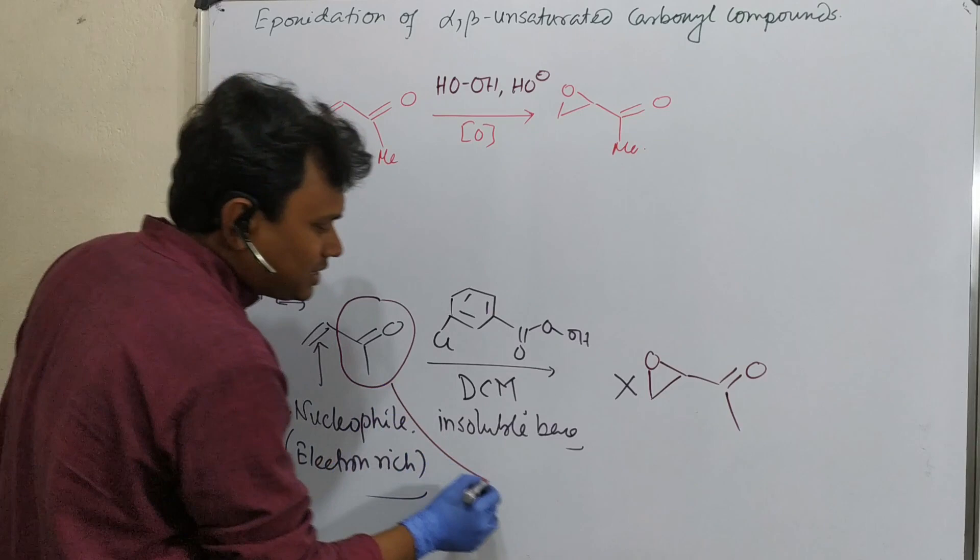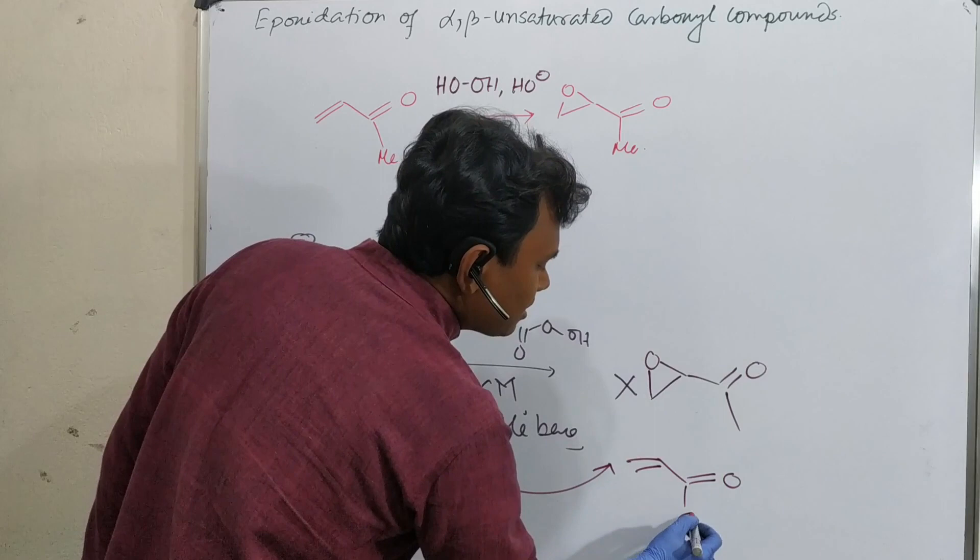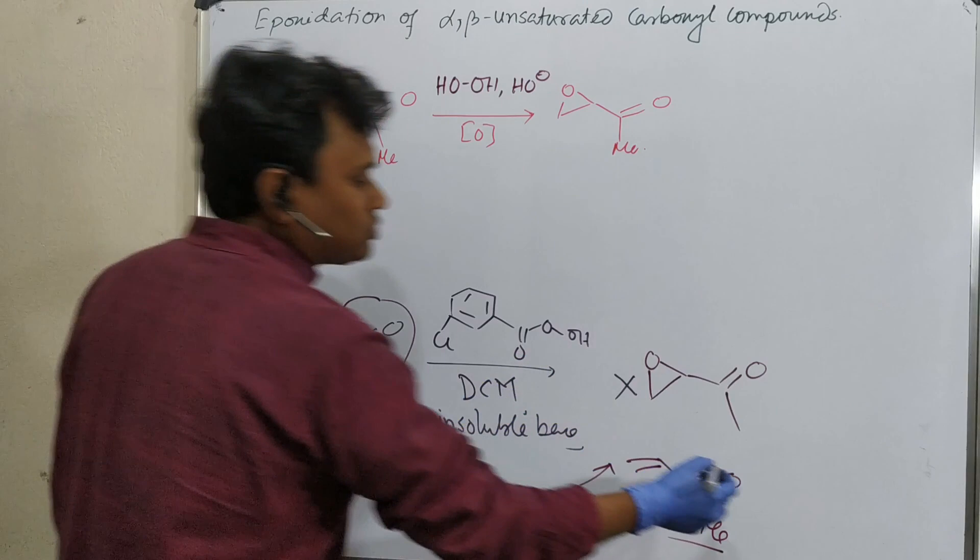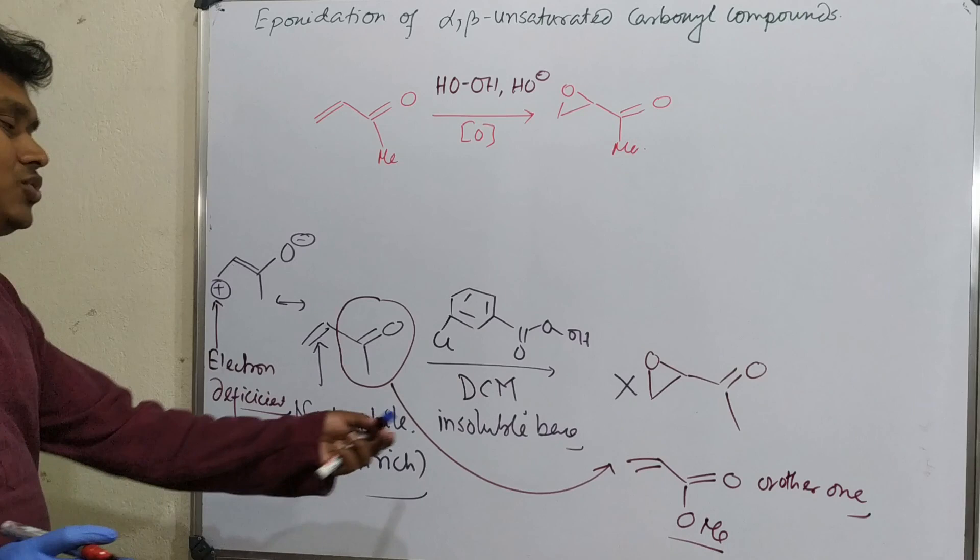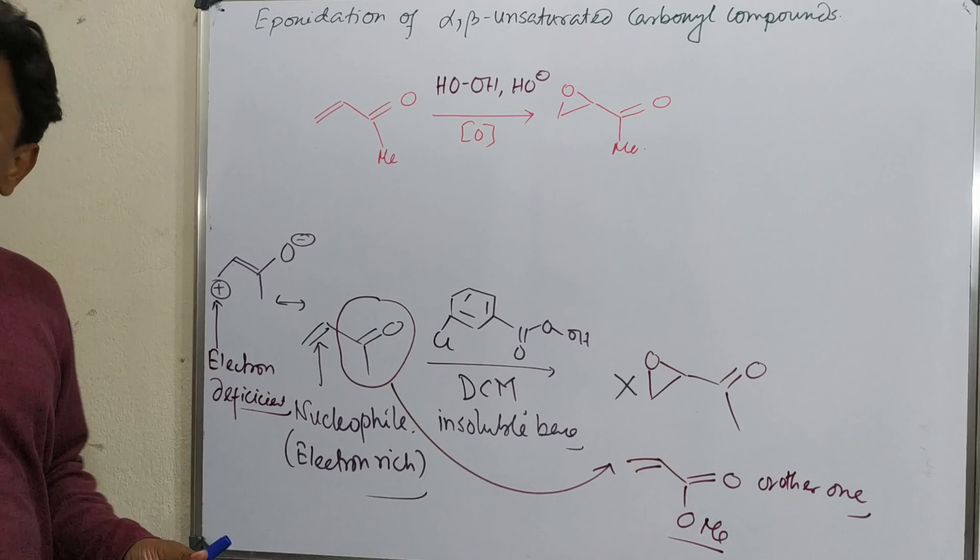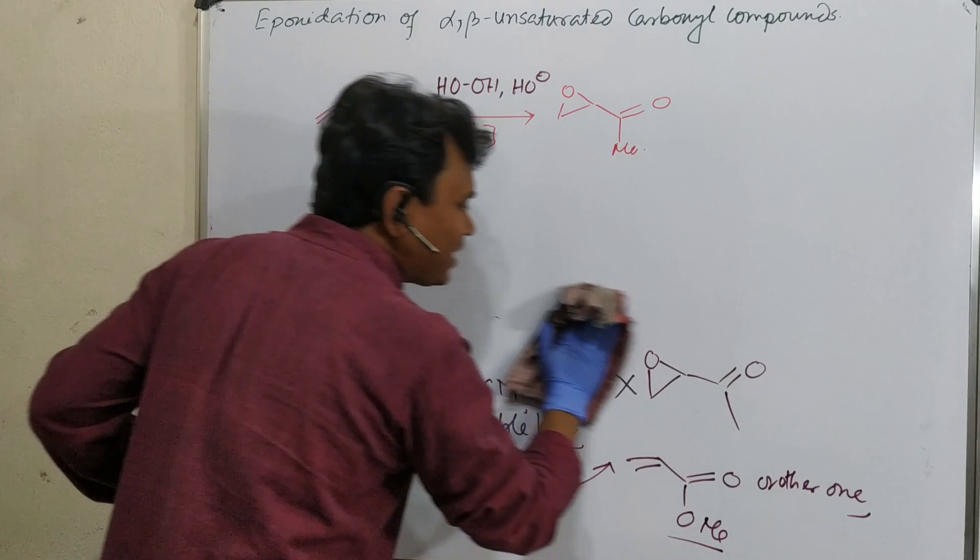What are the side reactions? See, this is a ketone, and in presence of peracid, what can it convert to? It can convert into the corresponding ester. For example, here, or the other one also. Means this is vinyl migration, so it may form ester. Ester formation is possible. So there is a problem using this method. So how could this problem be avoided? This problem could be avoided using hydrogen peroxide and alkali.